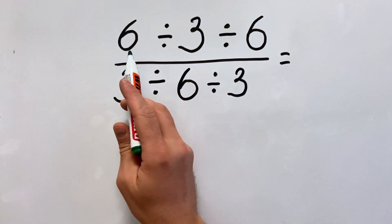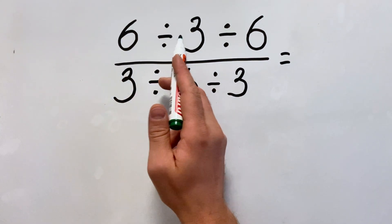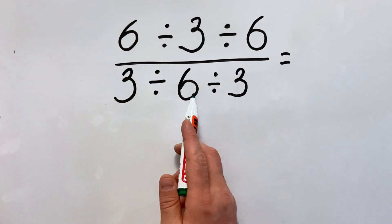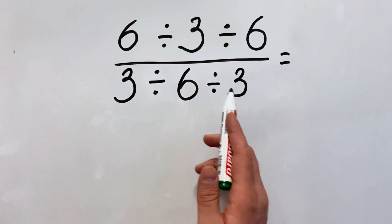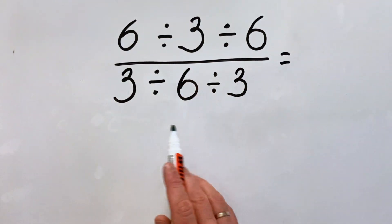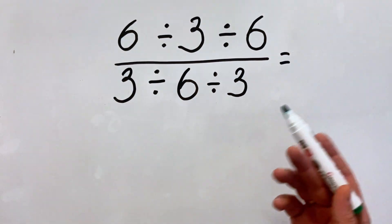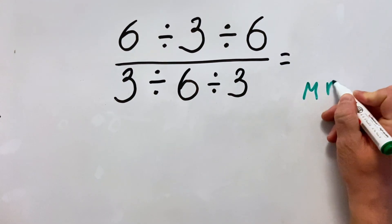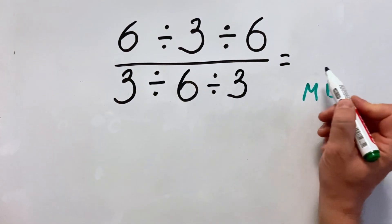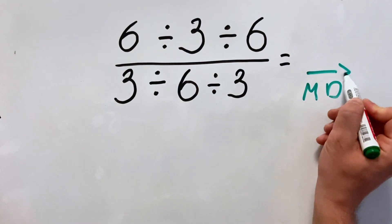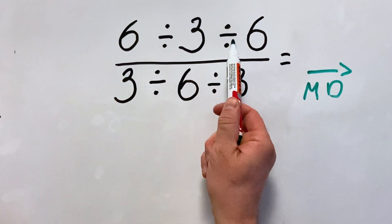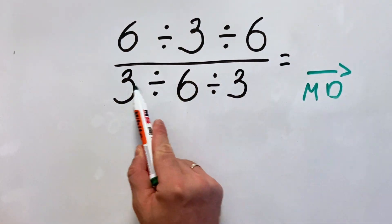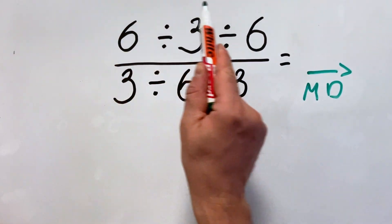Hello everyone, we have 6 divided by 3 divided by 6 over 3 divided by 6 divided by 3. To solve this equation correctly, we must remember the order of operations, where multiplication and division have equal priority and we need to do them from left to right. In this case, we have only division, therefore all operations will be done from left to right.